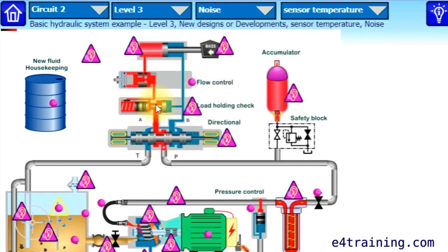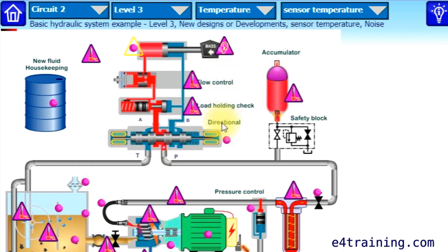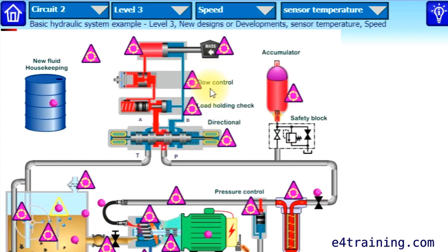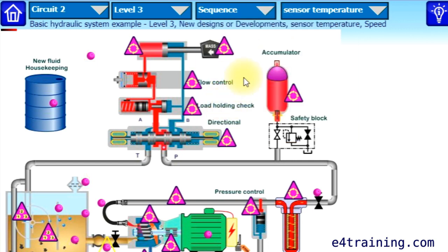Noise takes you through noise — generally the first sign of a problem can be the noise changing or the noise signal. Temperature is always critical with hydraulics and fluid viscosities, showing where temperature is generated and where it can cause issues. Speed issues cover if you've got your systems running too slowly or too fast — select that and it will prompt you with some potential causes.